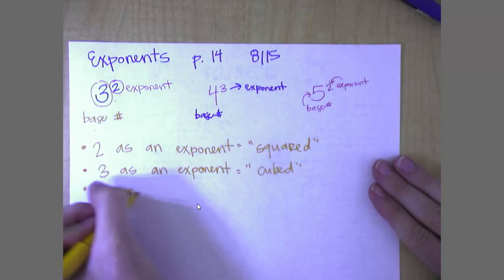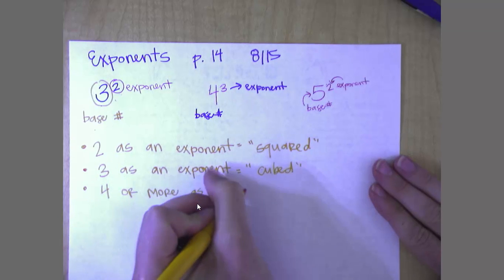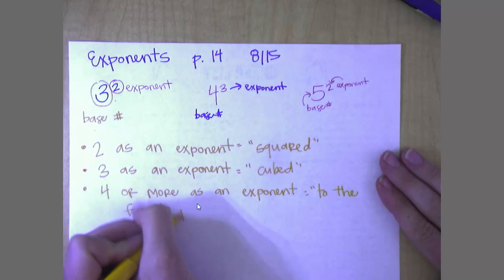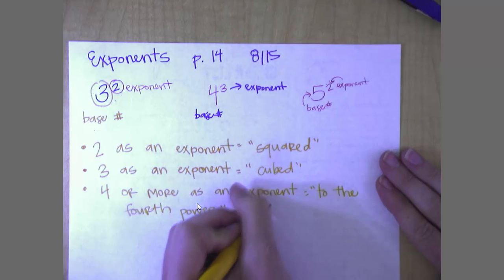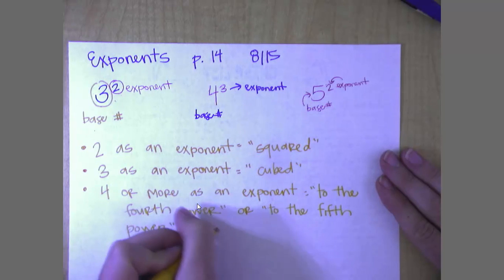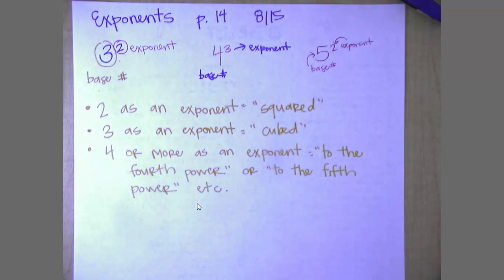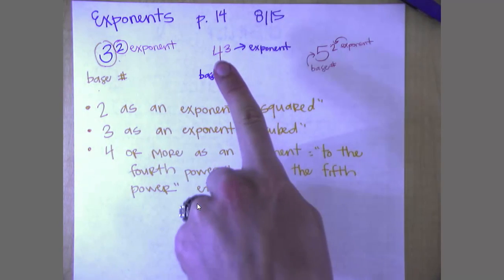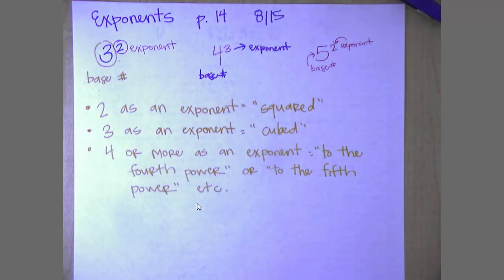If it's a 4 or more as an exponent, we're just going to say to the 4th power or to the 5th power, etc. So the only ones that have cool names are the 2's and 3's. They say squared and they say cubed. Could you say this is 3 to the second power? Yes, it's just not really the cool way to say it. You could say this is 5 to the second power. And you could say this is 4 to the third power. But the more appropriate, the more grown-up way to say it is cubed and squared.